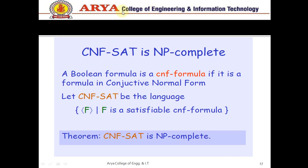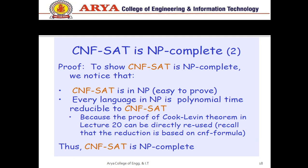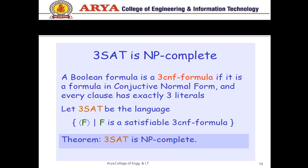Next we prove that CNF-SAT is NP-complete. We already know SAT is NP-complete. CNF-SAT means we have a number of variables with AND and OR operators. A boolean formula is a CNF formula if it is a formula in conjunctive normal form. Let CNF-SAT be the language of satisfiable CNF formulas — we have to prove this is NP-complete. For completeness, first we prove it is in NP, and second we reduce SAT to CNF-SAT. Because SAT is NP-complete and we can reduce SAT to CNF-SAT, we can say CNF-SAT is also NP-complete.